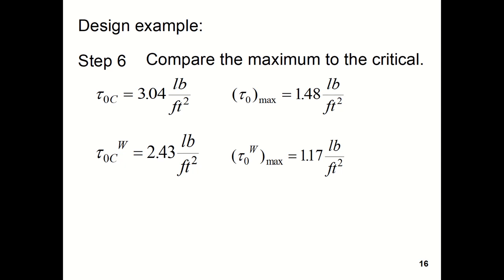Next step is to compare the maximum applied shear stress to the critical shear stress where motion will occur. So τ₀c was equal to 3.04 pounds per foot squared, and τ₀max is 1.48 pounds per foot squared. Likewise, the critical shear stress on the wall is 2.43 pounds per foot squared, and the maximum applied shear stress to the wall is 1.17 pounds per foot squared. So both for the bottom of the channel and the walls of the channel, the applied shear stress is less than the critical shear stress, so the rocks should not move.